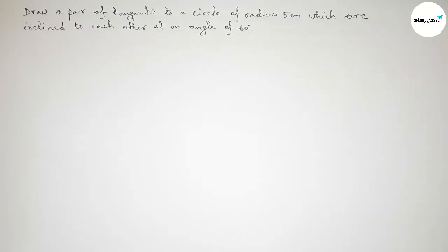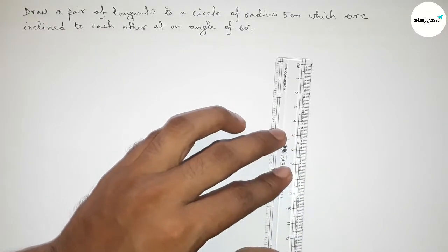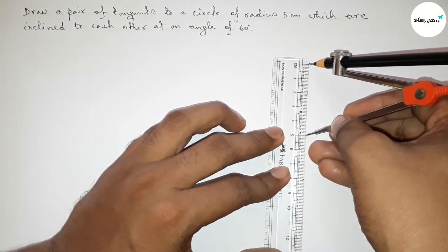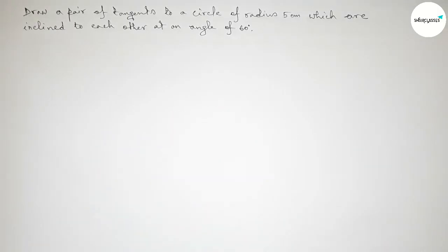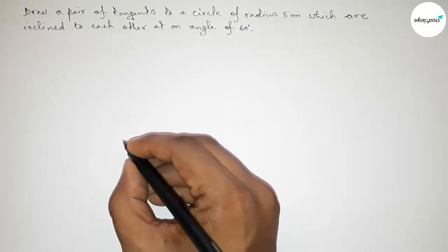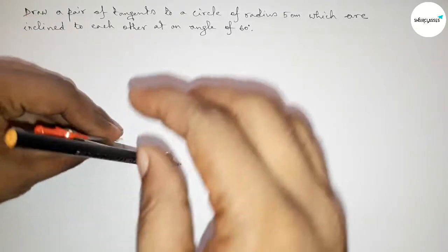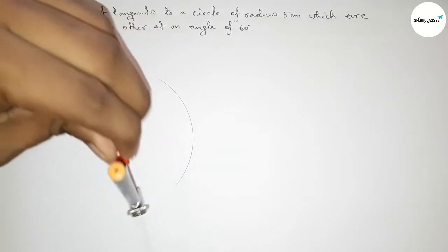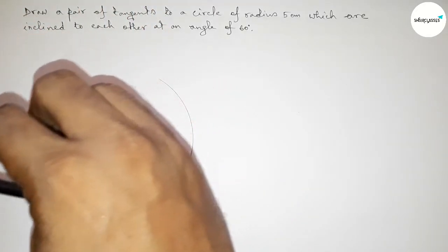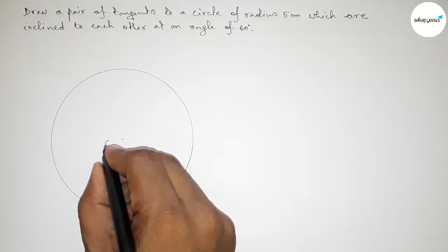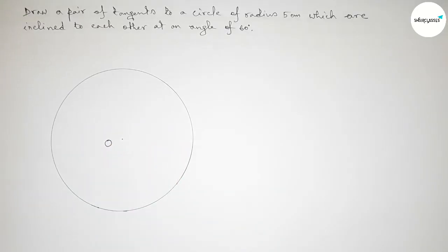First of all, we have to draw a circle of radius 5 centimeters. Taking 5 centimeters using a scale — this is 5 centimeters. Now taking a point as the center, putting the compass on the point and drawing a circle with radius 5 centimeters. Taking point O as the center of the circle.